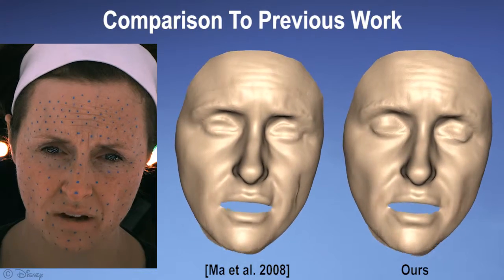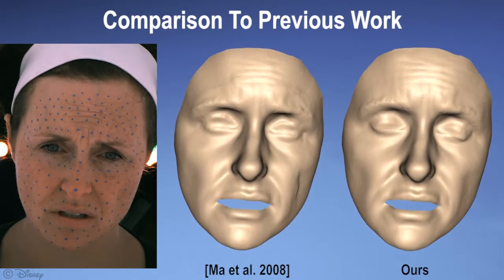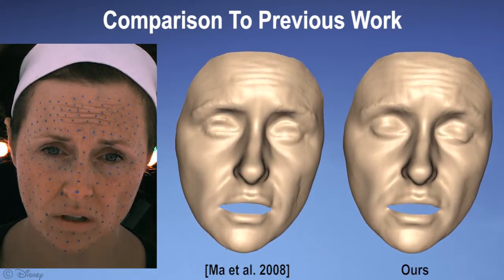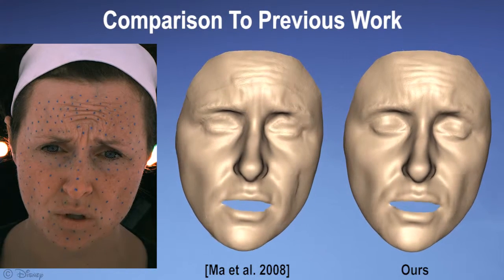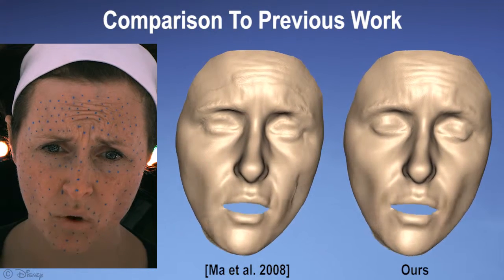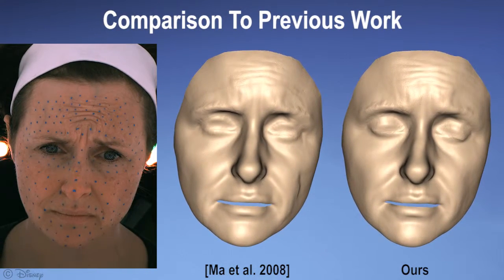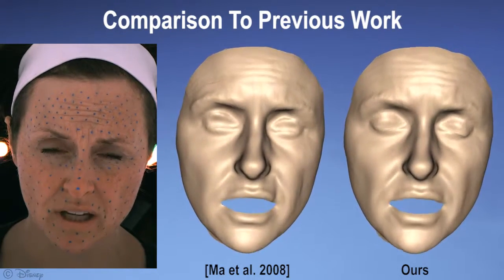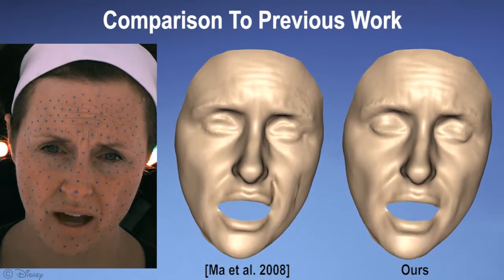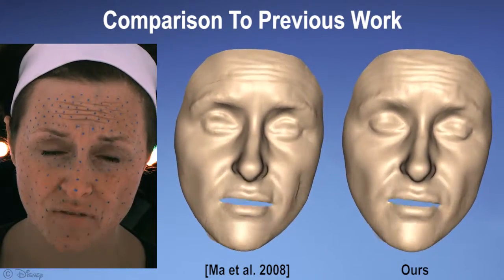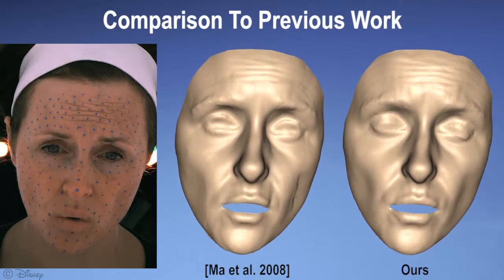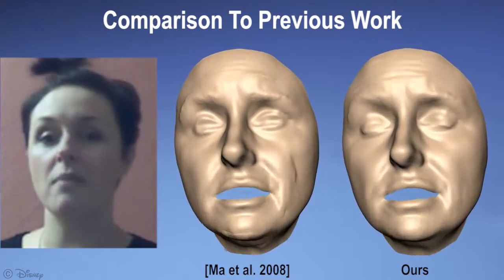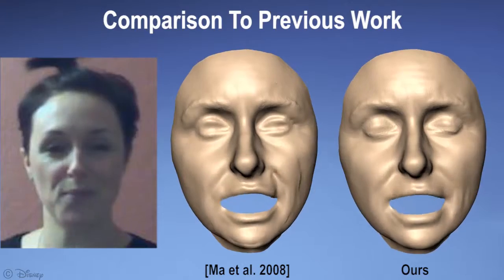We compare our spatial enhancement approach to the polynomial displacement map technique of Ma and colleagues, first on the motion capture input sequence. Since polynomials don't extrapolate well, their approach has problems with input that is far away from the training set, causing artifacts on the cheek and forehead. These artifacts are further exaggerated on the Kinect input, which is even further outside the database.